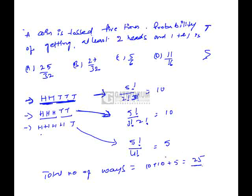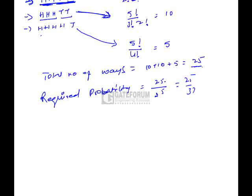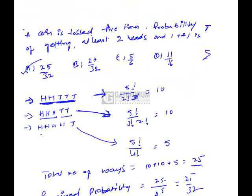The required probability equals favorable cases divided by total number of cases. Favorable cases = 25 and total number of outcomes when a coin is tossed 5 times = 2^5 = 32. So the probability is 25/32, and the correct option is Option A.